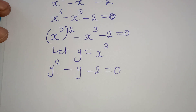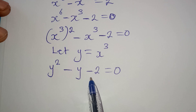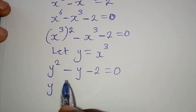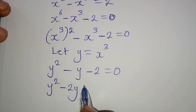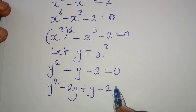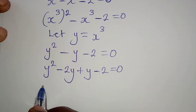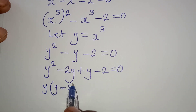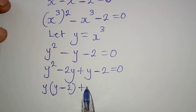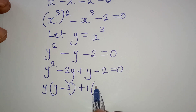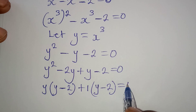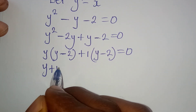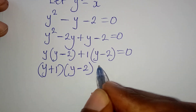This is now a quadratic equation. I can factorize this — look for two numbers that multiply to give minus 2 and add to give minus 1. The two numbers will be minus 2 and 1. So I will have y squared minus 2y plus 1y minus 2 equals 0. Then I factorize: y comes out here — I'll have y(y minus 2), then plus 1(y minus 2), equal to 0.